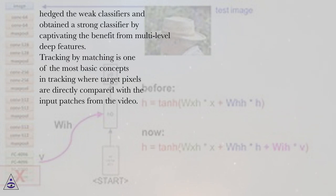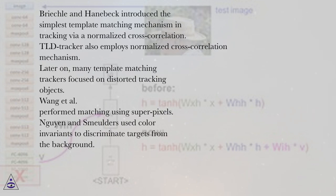Tracking by matching is one of the most basic concepts in tracking where target pixels are directly compared with the input patches from the video. Birchfield and Rangarajan introduced the simplest template matching mechanism in tracking via a normalized cross-correlation. TLD tracker also employs normalized cross-correlation mechanism. Later on, many template matching trackers focused on distorted tracking objects. Wang et al. performed matching using super pixels. Wen and Smulders used color invariants to discriminate targets from the background.